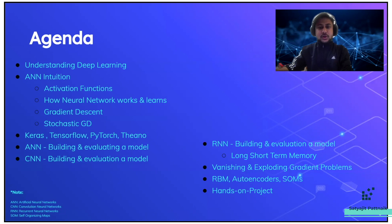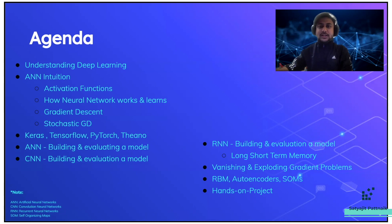We'll be learning how neural networks work and learn, what is gradient descent and stochastic gradient descent. Then we'll understand various frameworks and libraries related to deep learning like Keras, TensorFlow, PyTorch, and Theano. After that, we'll look at artificial neural networks — we'll build a neural network, evaluate it, and I'll also talk about fine tuning parameters where you can improve your ANN model.